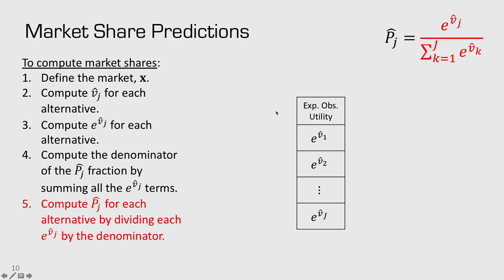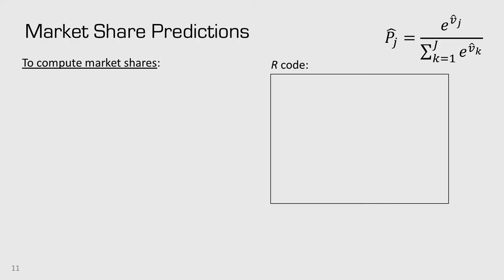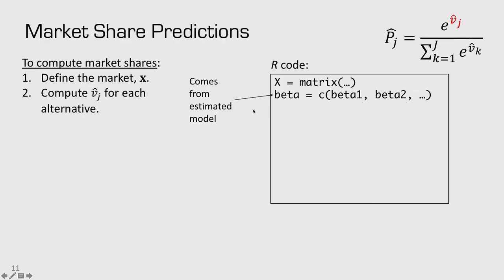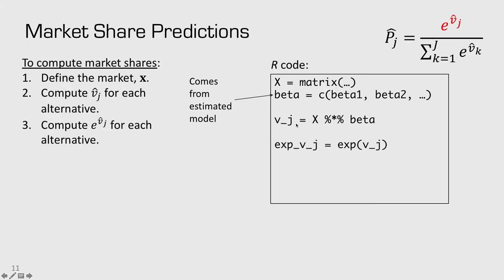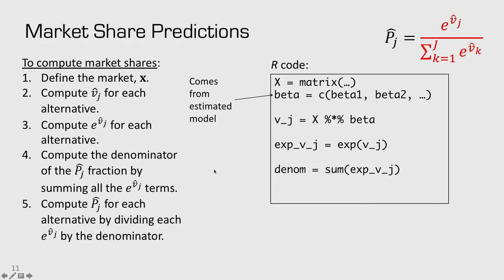Now we have all the pieces to compute the shares. To compute the probabilities, we divide each value of e to the vj by the denominator. To summarize the four steps: first, define a market. Then compute the observed utility using matrix multiplication. Exponentiate those values. Compute the denominator by summing them up. Finally, the probabilities are e to the vj over the denominator. With just four lines of code, we can simulate market shares of the different alternatives.